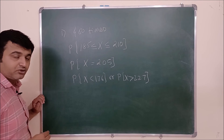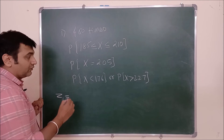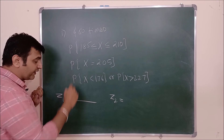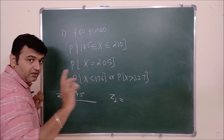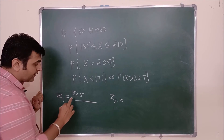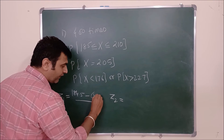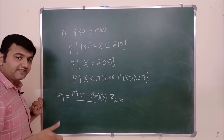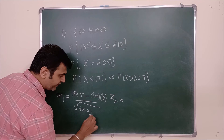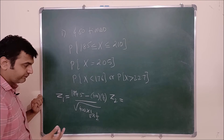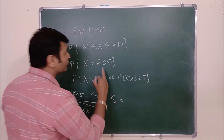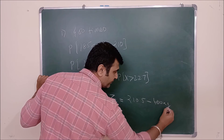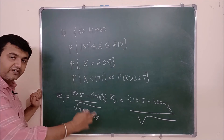Since n is very large, we take the help of the normal distribution — standard normal distribution. The first step: you find the Z score. So Z1 and Z2. The formula is X minus mu upon sigma. You don't take 185 — you take 184.5, taking 0.5 back and 0.5 ahead. So Z1 = (184.5 − NP) / √(NPQ) = (184.5 − 400×0.5) / √(400×0.5×0.5), since it's a fair coin with probability of success 0.5. And Z2 = (210.5 − NP) / √(NPQ) = (210.5 − 400×0.5) / √(400×0.5×0.5).